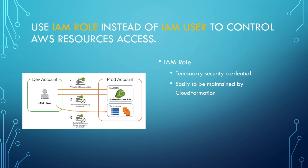The last best practice is to use an IAM role instead of an IAM user to control AWS resource access. When we use an IAM role, as shown in the picture, a user who wants to access a resource first uses STS assume-role to assume the IAM role. It then gets temporary security credentials, and the user uses those credentials to access the resources. There are two benefits of using an IAM role. First, it uses temporary security credentials, whereas IAM users use long-term security credentials. Second, IAM roles are easy to maintain with CloudFormation.